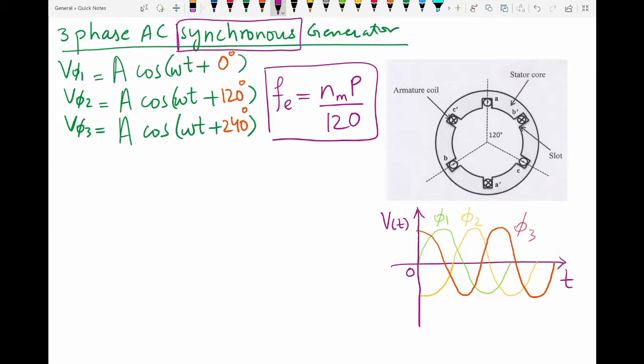Now we know that the three-phase voltages typically are given by the formulas stated on the left-hand side of the page, where you can see that their amplitudes are equal but they are 120 degrees out of phase with each other.